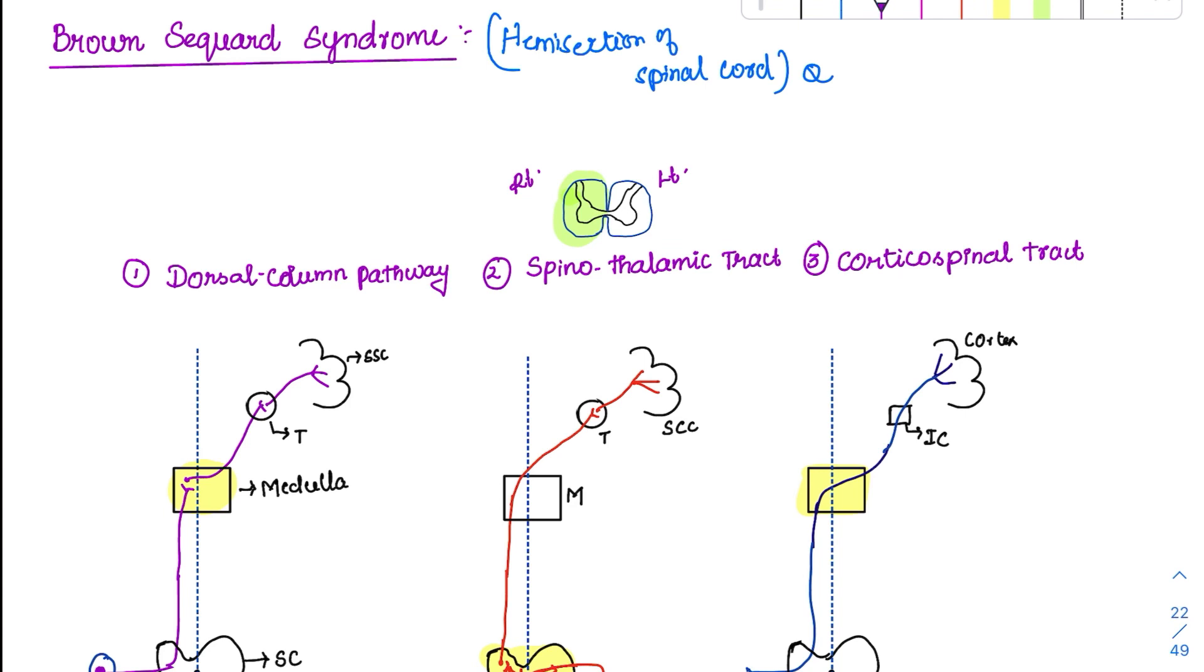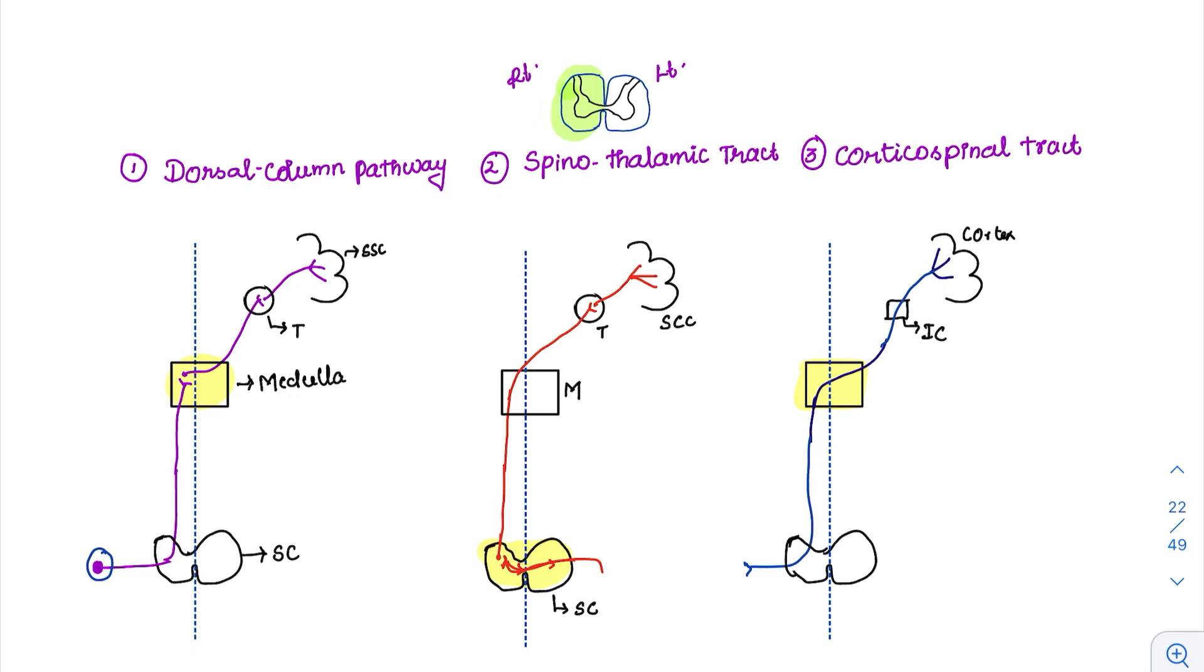So what has happened? At the spinal cord, two ascending tracts are going and one descending tract, that is the corticospinal tract which we saw now, it is coming down. So all those tracts can get damaged.